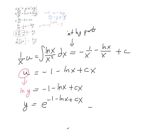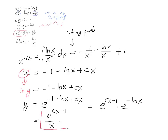You can simplify this a bit nicer: think of it as e to the cx minus 1 times e to the negative natural log of x. That piece just turns into 1 over x, so the whole thing simplifies to e to the cx minus 1, all divided by x. That is the final answer.